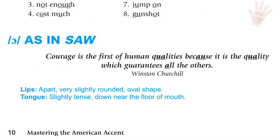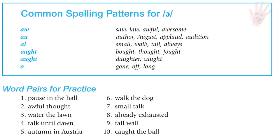Aw as in saw. The lips are apart and very slightly rounded in an oval shape, and the tongue is slightly tense and down near the floor of the mouth. Common spelling patterns: AW as in saw, law, awful, awesome; AU as in author, August, applaud, audition; A plus L as in small, walk, tall, always; OUGHT as in bought, thought, fought; AUGHT as in daughter, caught; and sometimes the letter O as in gone, off, and long.